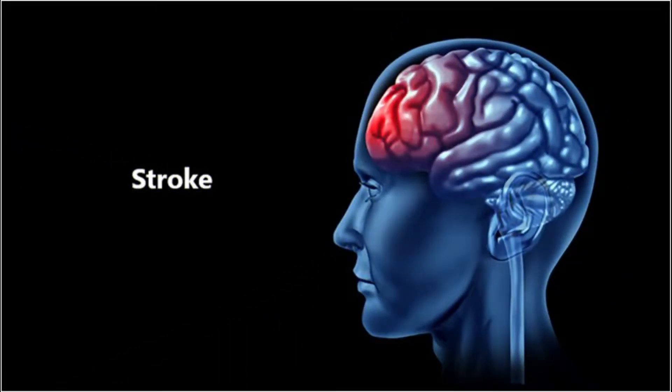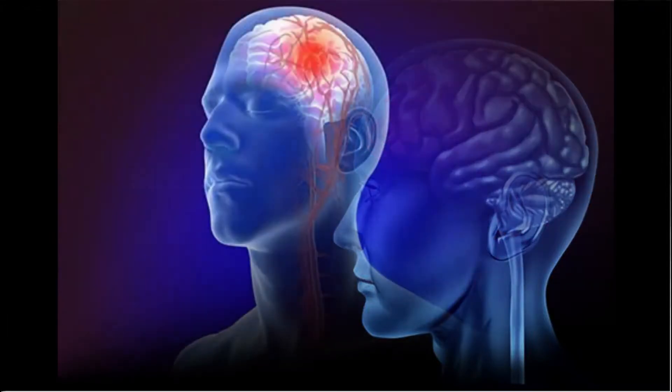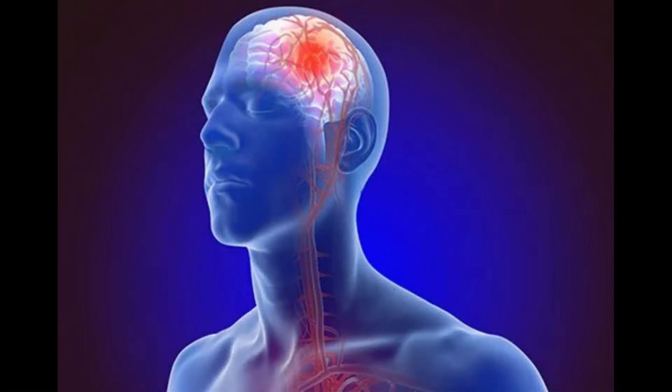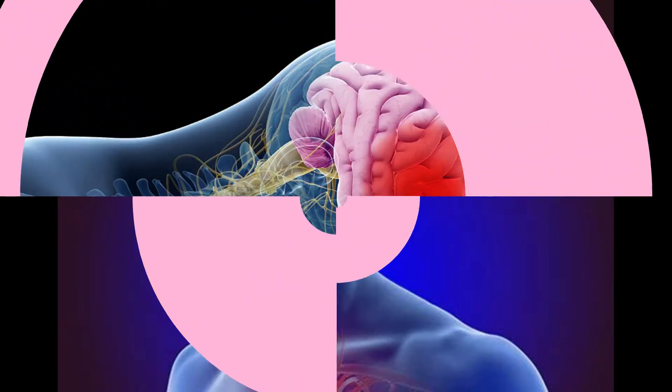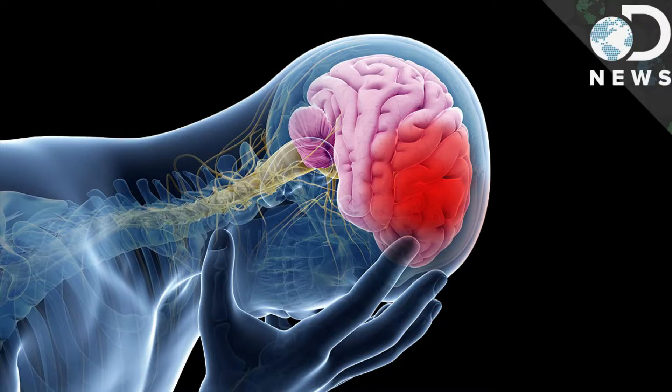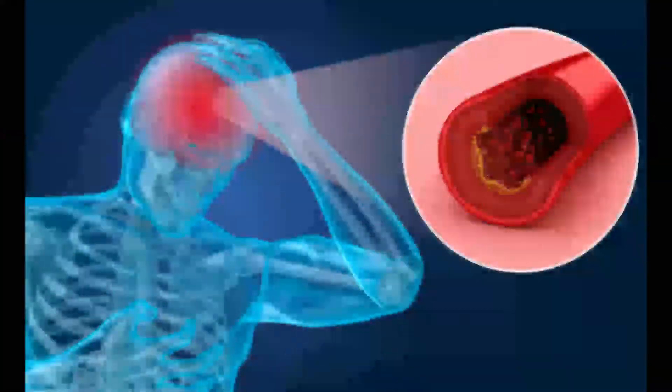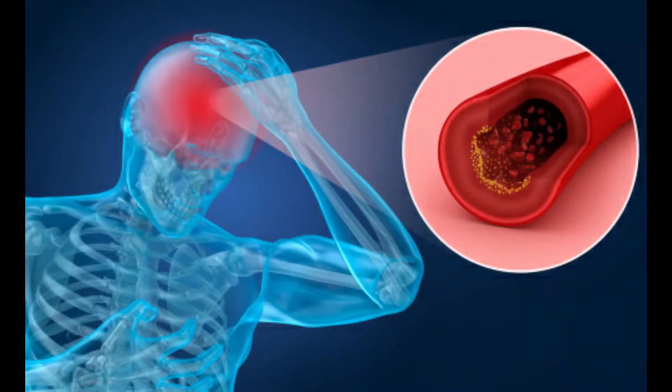Number two on our list is stroke. A stroke happens when the artery that supplies blood to the brain is leaked or blocked. The cells, which are oxygen deprived, die within a short period of time after the blockage. Stroke is responsible for 11.1 percent of deaths in the world. Mortality rate from this disease increased from 5.7 million to 6.2 million between 2000 to 2015. Those with high blood pressure who smoke or have a family history of stroke, African-American race, and females are at high risk for developing this disease.